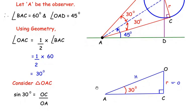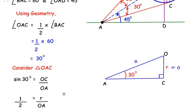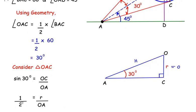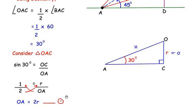Sine 30 equals opposite over hypotenuse, which is OC over OA. Since sine 30 is the standard value 1 over 2, we have 1/2 equals r over OA. Cross-multiplying gives OA equals 2r. Let us consider this as equation 1.